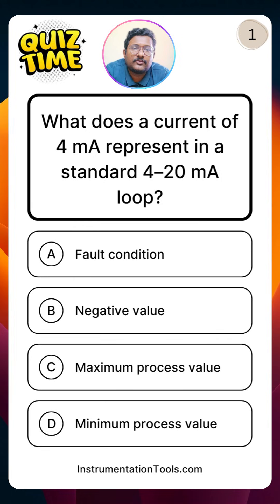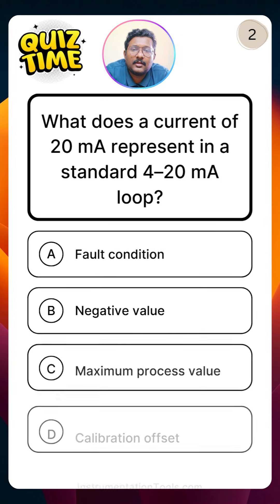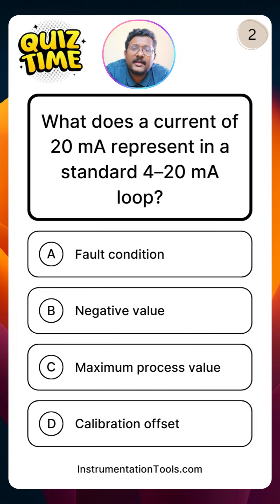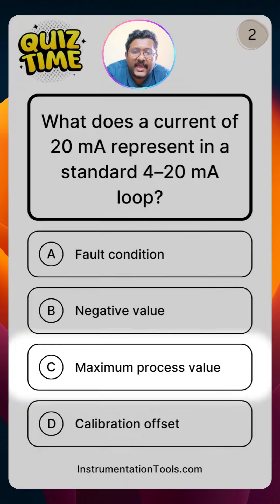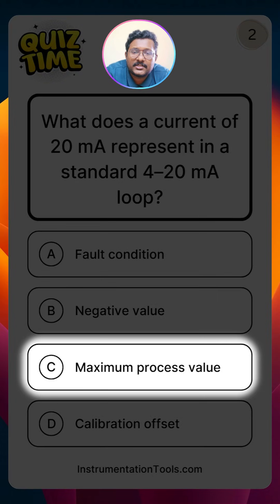Next question: what does the current of 20 milliampere represent in a standard 4 to 20 milliamp loop? As discussed, the 20 milliampere represents 100% of process variable — that means maximum process value — which is option C.